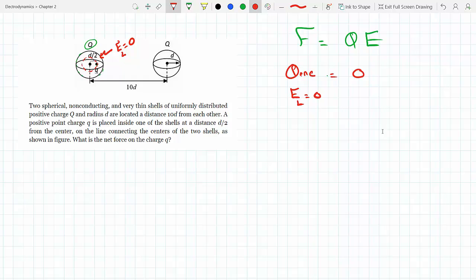We are left with the right shell. So let's use this color on the right shell. If I am 10d away and it's d over 2 from the center, the distance between—remember an electric field from a sphere that is very far away—